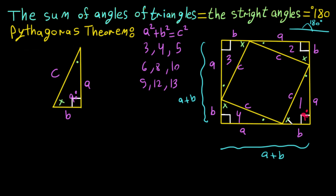Since the triangle has a 90° angle, the dot and X must sum to 90°. At each corner of the inner shape, we have one dot angle and one X angle, which together equal 90°. This means each angle of the inner shape is 90°, confirming that the inner shape is a square with side length c.